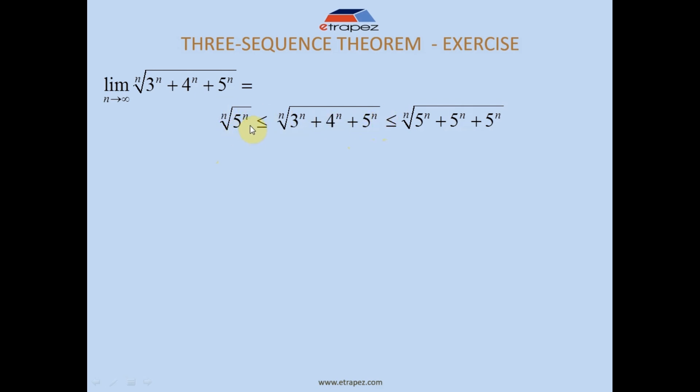And we also agree that this is always smaller than that, right? Because this still has 3^n + 4^n. So this is also a true inequality, it's obvious. Now we calculate the limit of the one from below, the limit of the one from above, and show that they are the same.